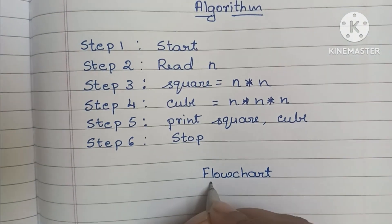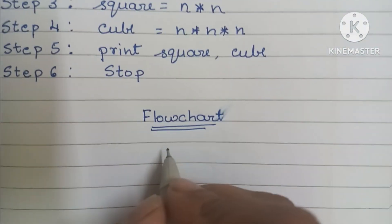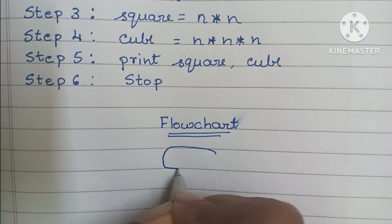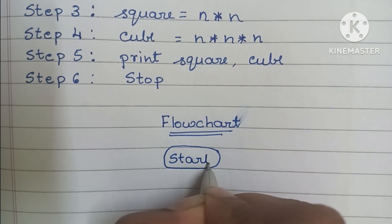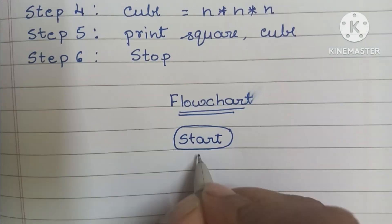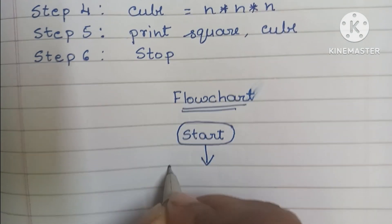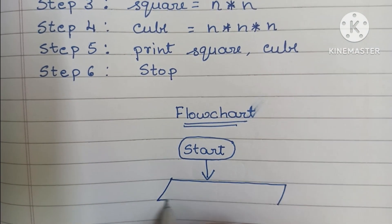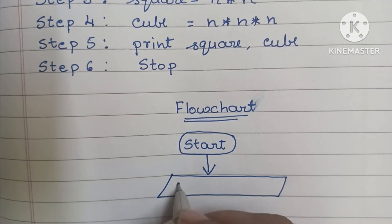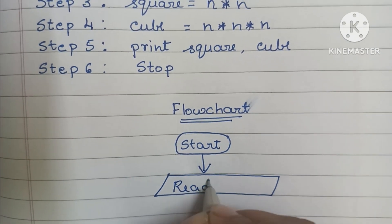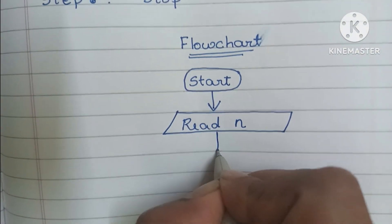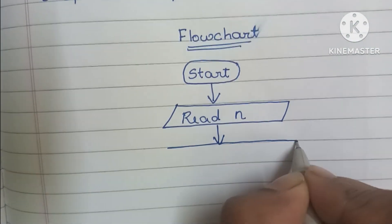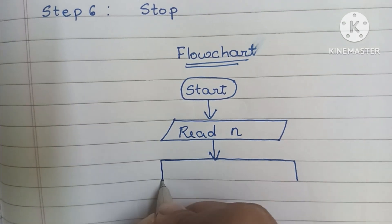A flowchart is a graphical representation of a solution to a problem. The flowchart starts with a start statement written within an oval shape. Next, we have to read input values; input values are written within a parallelogram shape. Within that, we have to write the read N value. Next, we have to do the calculation; calculation is written within a rectangular shape.